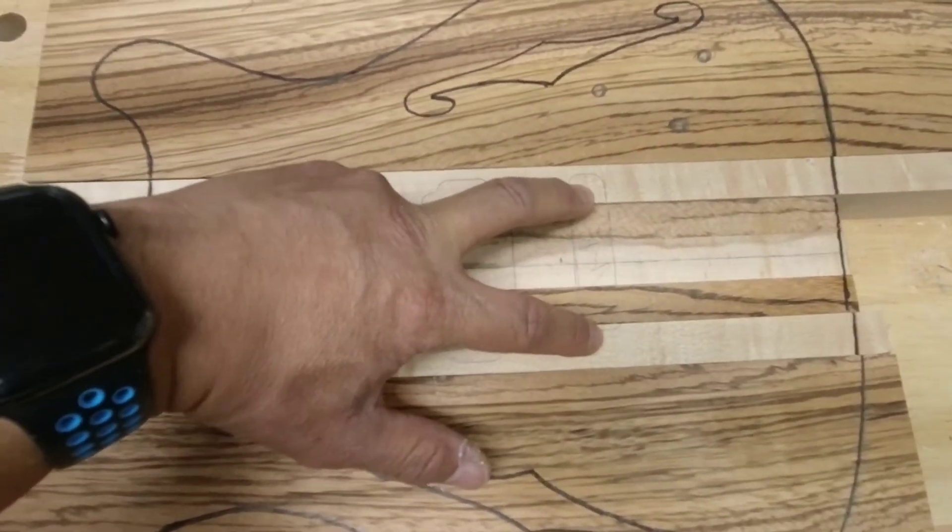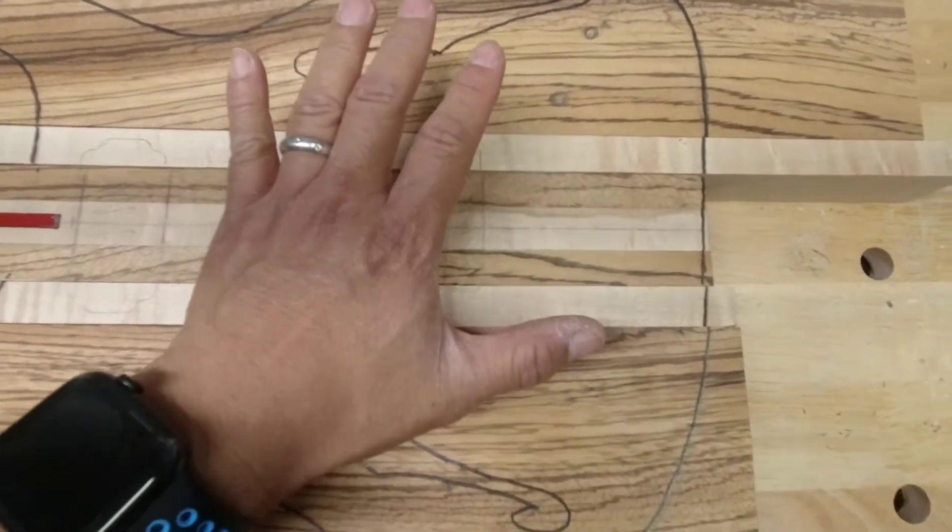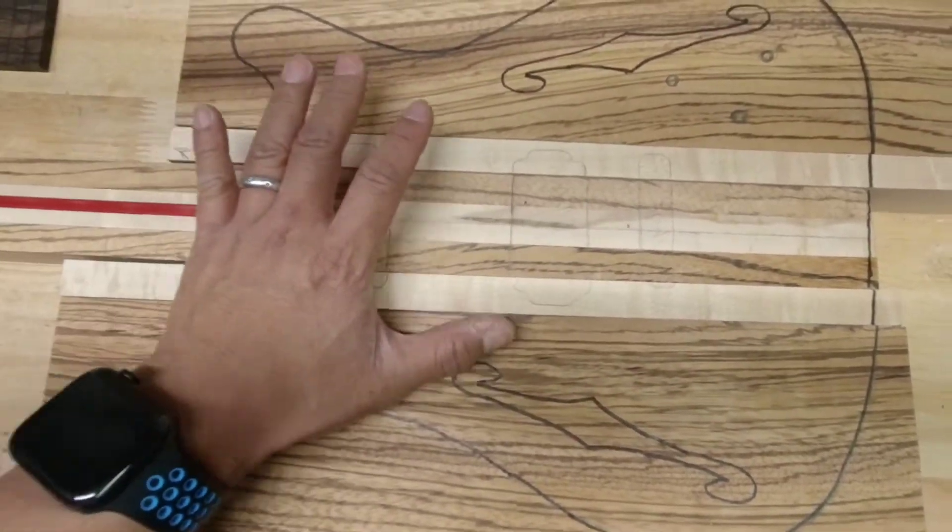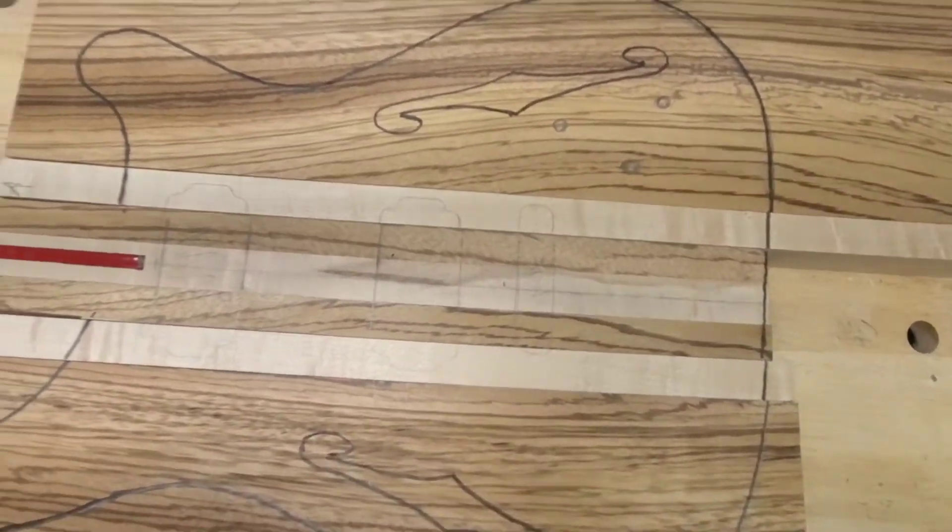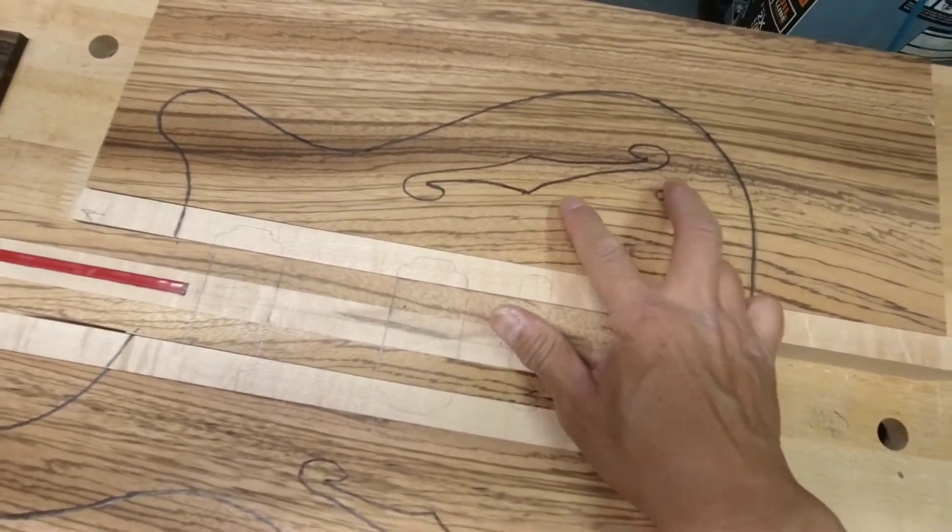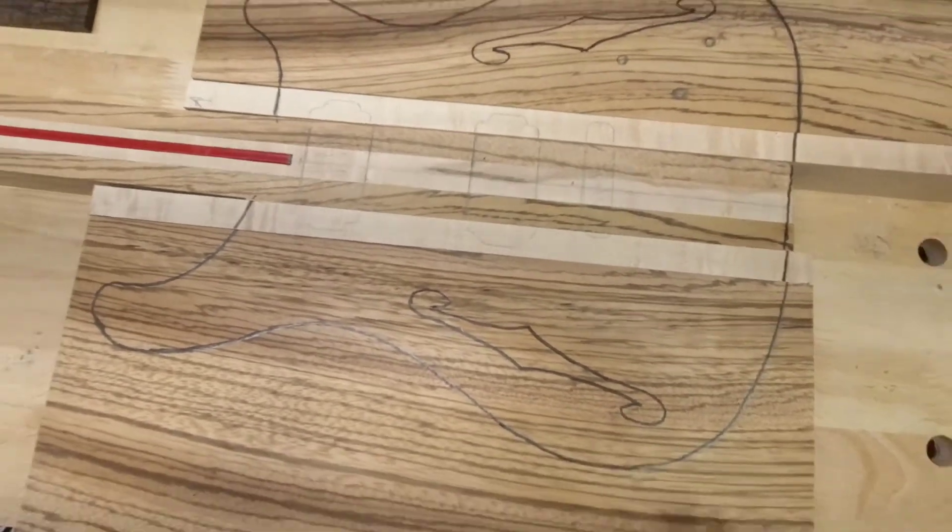This is where the tremolo is going to be routed through. I needed to make sure that we got all of this squared away where I was going to put my electronics. I believe I'm going to put my volume and my tone here and put my three-way switch there.